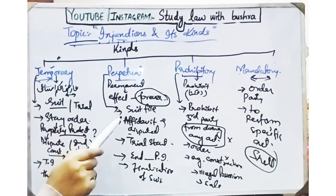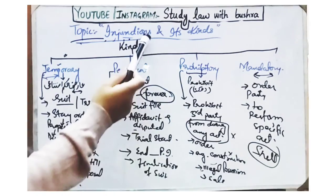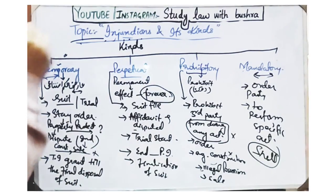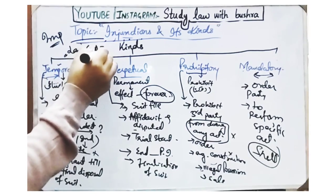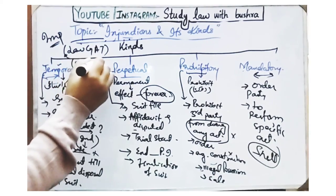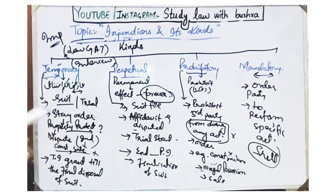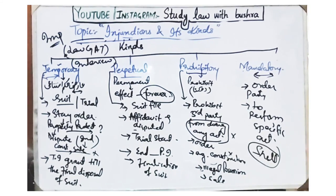So these were the four kinds of injunctions: temporary, perpetual, prohibitory, and mandatory injunctions. This was our today's discussion on injunctions and their kinds. This is a very important topic from the perspective of your law exams and license interviews as well. I hope you understood this topic if you have watched this video attentively. If you liked this video, please like it, comment, don't forget to subscribe to the channel, and share it with as many friends as possible. If there is any confusion, you can ask me through the comments. Thank you so much for watching. Till then, Allah Hafiz.